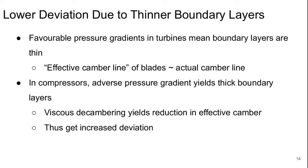But in compressors, the adverse pressure gradient yields very thick boundary layers, particularly on what we call the suction side of the blade or the side that has a lower set of pressure. Then viscous decambering tends to yield a reduction in the effective camber and this leads to an increase in deviation.